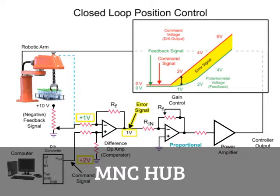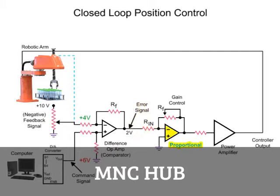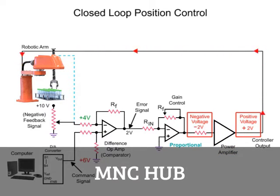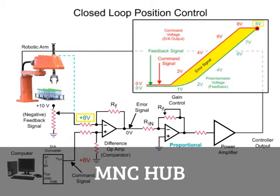In this system, there is not an immediate response by the robotic arm to the command signal. The delay of the arm and feedback signal creates a positive error signal voltage at the output of the difference op-amp. The error signal is inverted by the proportional difference op-amp to a negative voltage, then amplified by the power amp and inverted to a positive voltage and applied to the motor of the robotic arm. The robotic arm moves to the desired position until the error signal at the difference op-amp is zero. When the arm reaches the desired position, the difference op-amp voltage is reduced to zero and the feedback voltage from the potentiometer equals the command voltage of the computer.